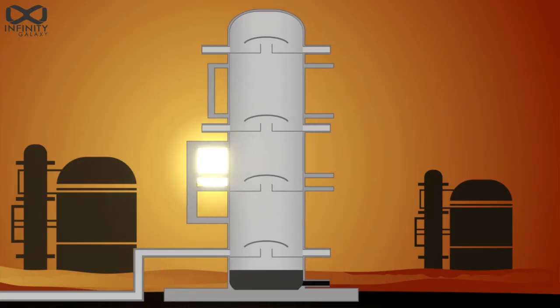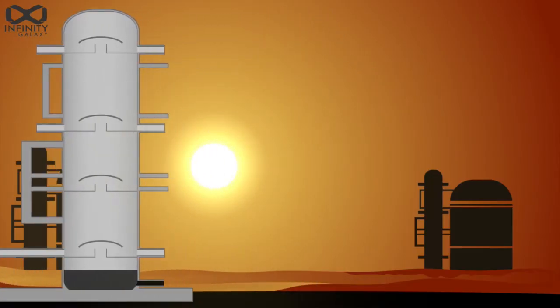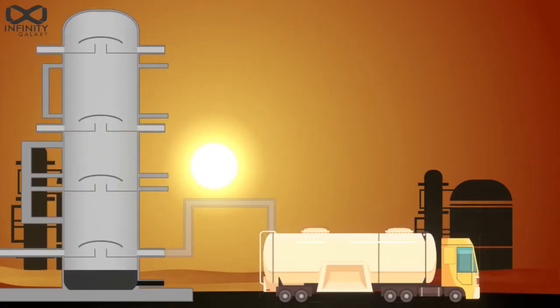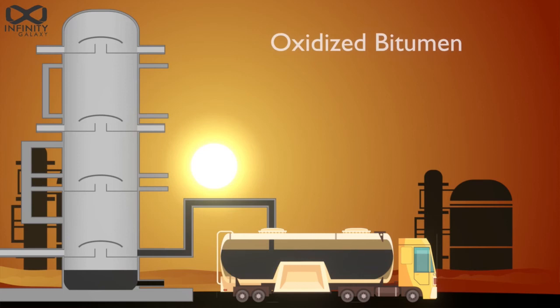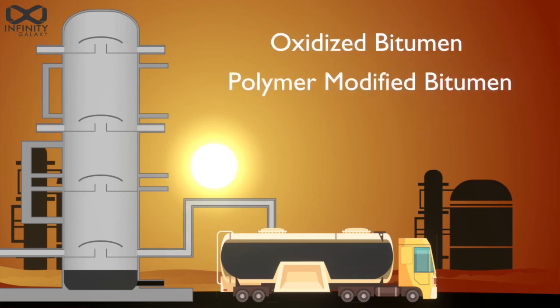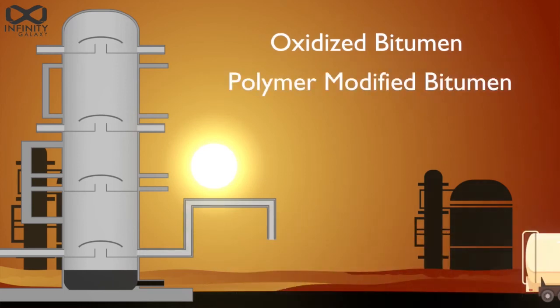The remaining substance of the mentioned process is called straight-run bitumen. This material will be finally sent to other containers for further processing and conversion to oxidized bitumen, polymer-modified bitumen, or other types of bitumen.